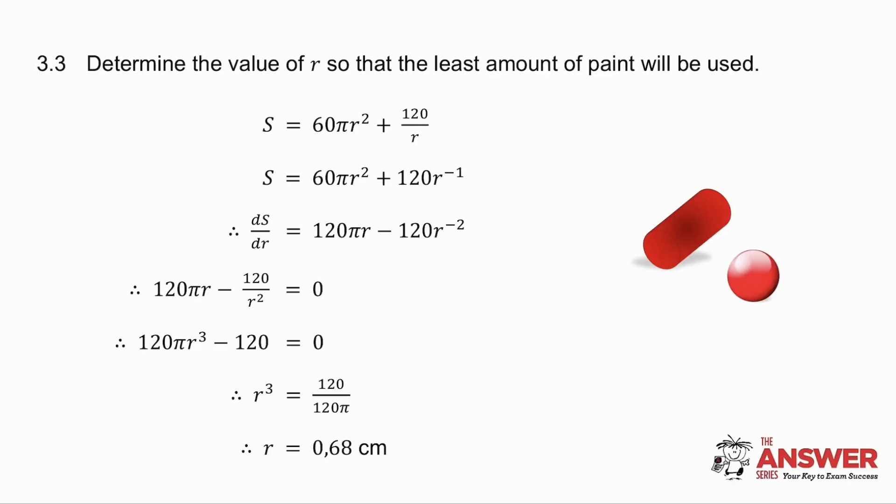The last question asks you to determine the value of r so that you will use the least amount of paint. In other words, I want to make the surface area a minimum. Well, how do I make it a minimum? I take the derivative, and I make it equal to 0. But first, I've got to sort out the fraction. There's my derivative. I make it equal to 0, and I solve for r.